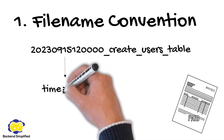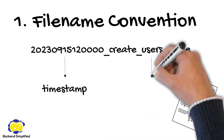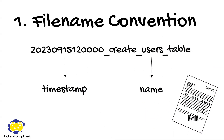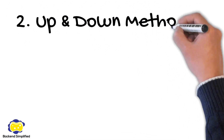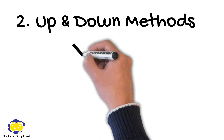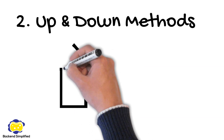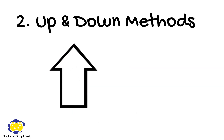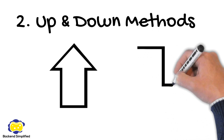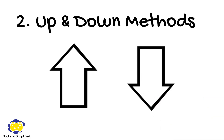The timestamp ensures that migrations are applied in the correct order. The second characteristic is up and down methods. A migration file typically contains two methods — up and down. The up method defines the changes you want to apply, like creating or altering tables. The down method defines how you reverse those changes, which is very useful when you need to do a rollback.